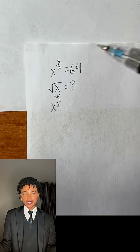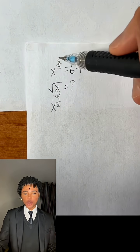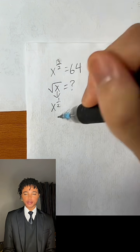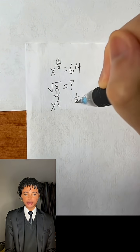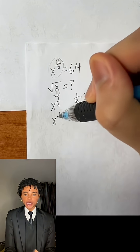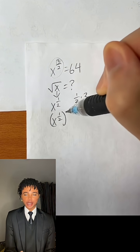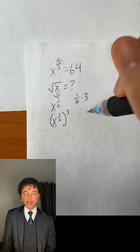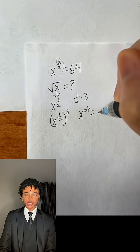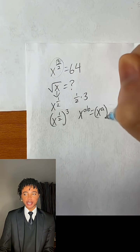So what we can do here is try to eliminate this 3, since 3 over 2 is basically just 1 half times 3. So this is also equal to x raised to the 1 half power raised to the third power, and that's because if we have x raised to the ab power, it's also equal to x raised to the a power raised to the b power.